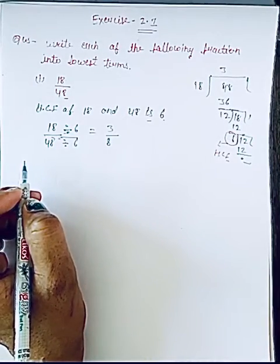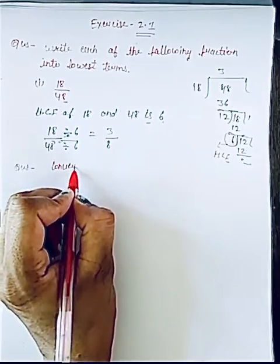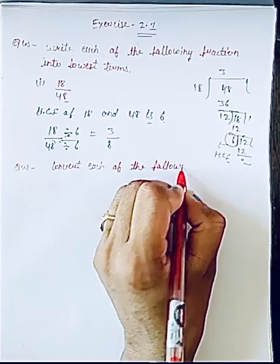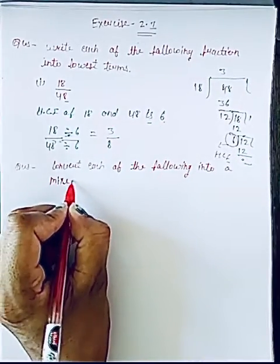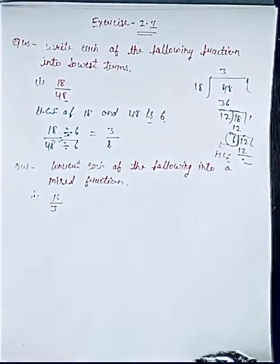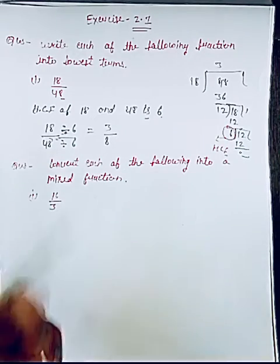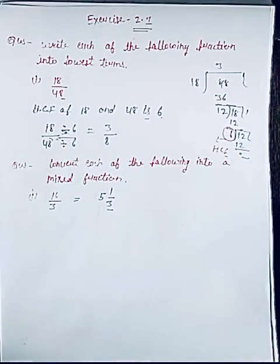The next question is: convert each of the following into mixed fractions. A mixed fraction is a fraction having a whole number along with a proper fraction. First question is 16 upon 3. Dividing: 3 fives are 15, remainder 1 upon 3. That is our proper fraction — numerator is smaller than the denominator.